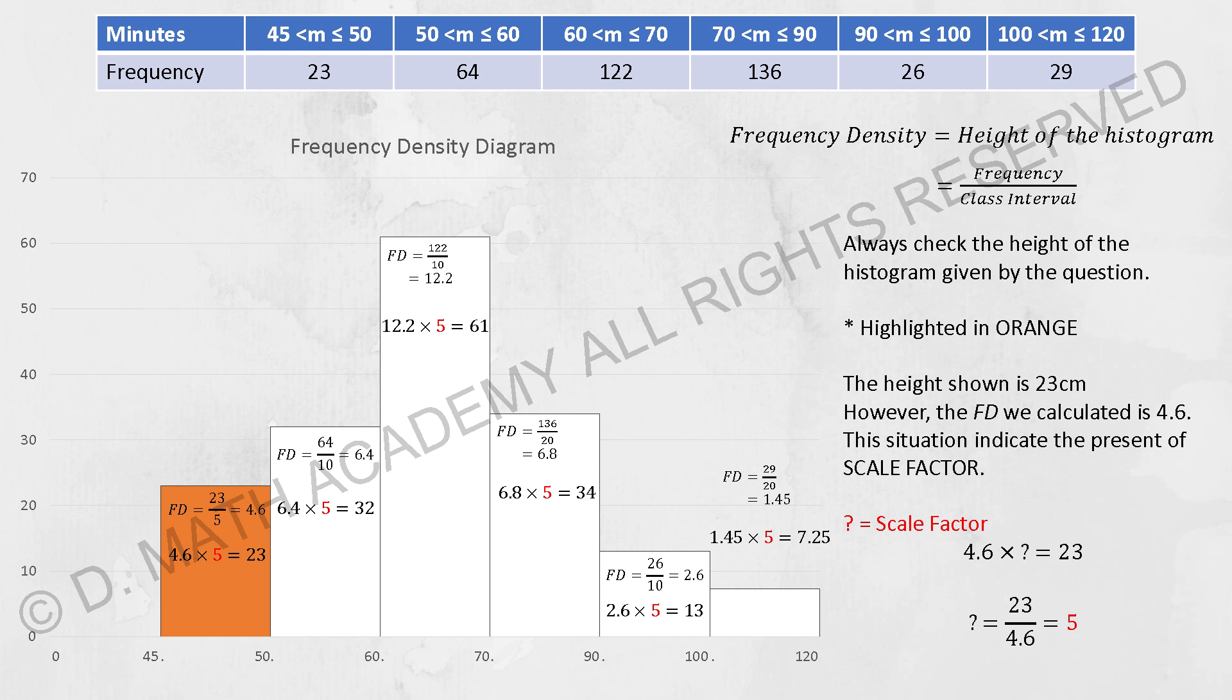You get 23 divided by 5 is actually 4.6. So it is not possible for you to draw 4.6 as 23, which directly represent that there's a scale factor involvement. You retrace it. Shift the 4.6 times unknown equals to 23, unknown equals to 23 divided by 4.6, which is equivalent to 5.